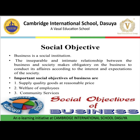Business is a social institution. The inseparable and intimate relationship between business and society makes it obligatory on the business to conduct its affairs according to the interest and expectations of society. Important social objectives of business are: supply of quality goods at reasonable price, welfare of employees, and community service.